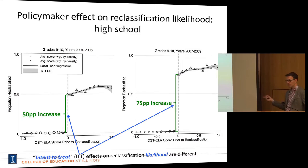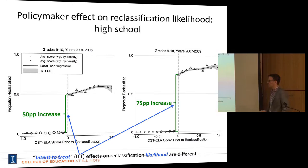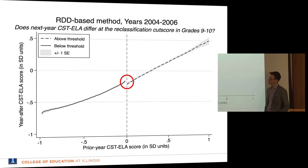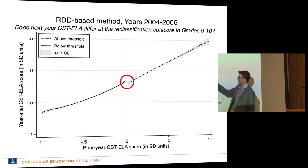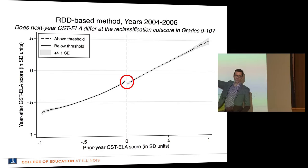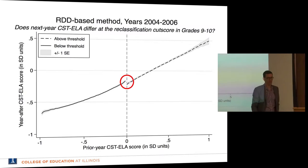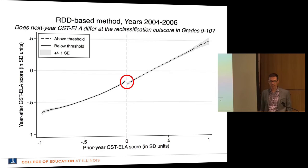Now for the intent-to-treat effect on next year's CST ELA score: in the pre-2007 period, we see a drop in next year's achievement for kids who attain the final criterion. Next year's achievement goes down. What we think is attributable here is that these kids are much more likely to get reclassified, and that's what's driving this negative effect. In the post-2007 period, we see a pretty much smooth continuation across the threshold.